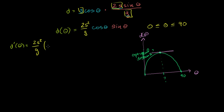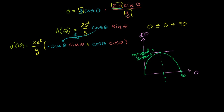In the product rule, we take the derivative of the first function times the second function. The derivative of cosine of theta is negative sine of theta, and we multiply that times the second function, sine of theta. Then we add the first function, cosine of theta, times the derivative of the second function — the derivative of sine theta is cosine of theta. So we took the derivative of cosine and multiplied by sine, then the derivative of sine and multiplied by cosine. Just the product rule.